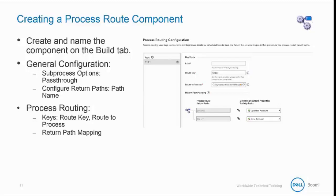If you define a return path under general configuration because you expect the subprocess being called to return data, then you must also use the return path mapping section to map the return path to a return document shape in the subprocess being called.